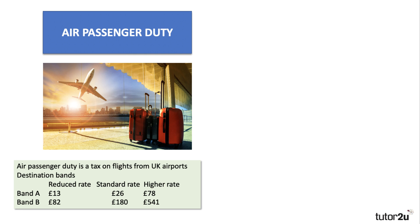Air passenger duty was introduced in the mid-1990s, initially as a general tax-raising measure, though it now has an environmental angle aimed at cutting carbon emissions from flights. It's a tax on flights from UK airports with two destination bands. Band B — long-haul flights where the destination capital is over 2,000 miles from London — carries a higher rate of £540 added to the price of your ticket, which is quite significant.